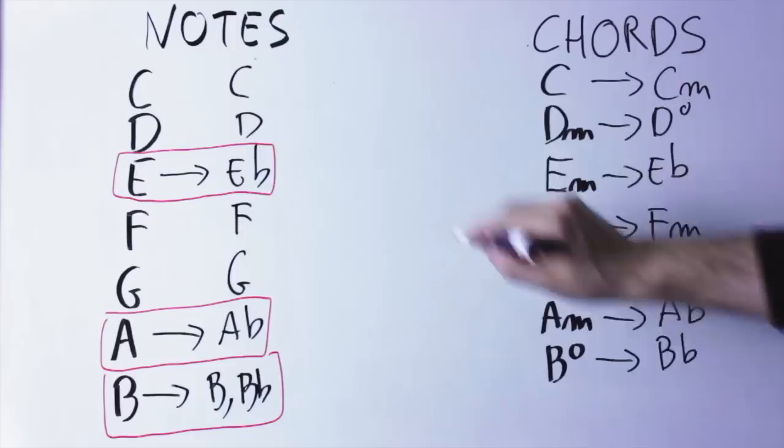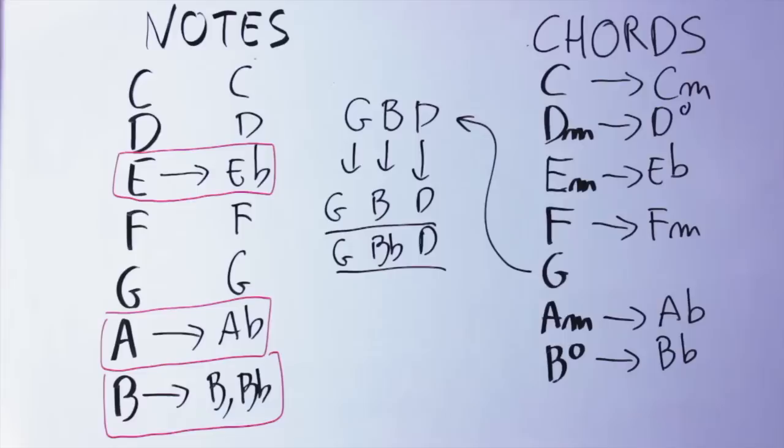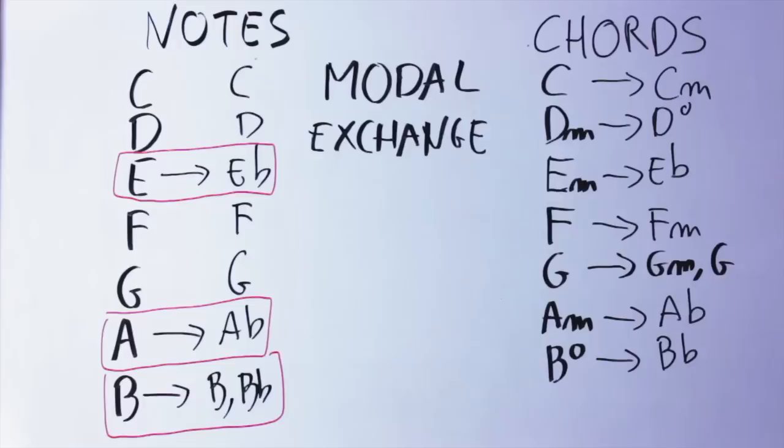For instance, if I take the E minor chord, I'm going to change the E into E flat, the B into B flat, and I get an E flat major chord. The only chord that makes an exception here is the G chord. In this case you have the option to transform the B note into a B flat, making it a G minor chord, or you can just leave the B note as it is so the G chord stays G. Long story short, it's because sometimes it sounds better to have G rather than G minor.